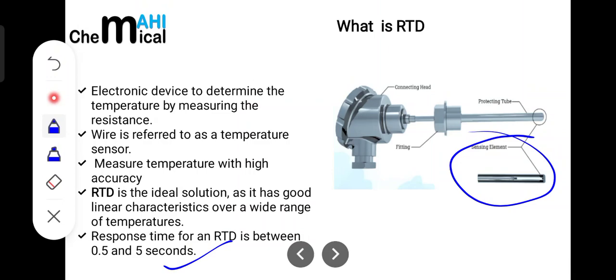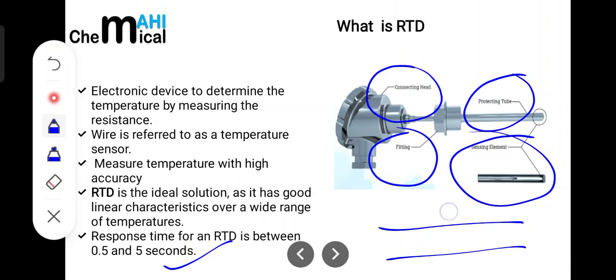Here if you see the diagram, we have the connecting rod, the fittings, and the protecting tube. If this is our pipeline, it can be easily installed here. The main thing to take care is that the bottom sensing element must be dipped inside the fluid whose temperature you are going to measure.